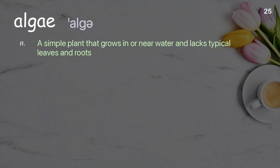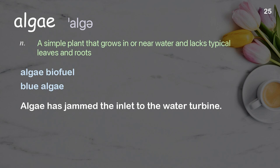Algae: A simple plant that grows in or near water and lacks typical leaves and roots. Examples: Algae biofuel. Blue algae. Algae has jammed the inlet to the water turbine.